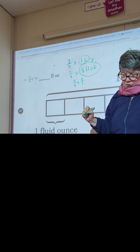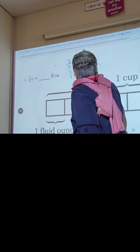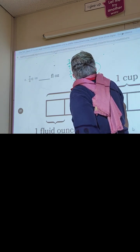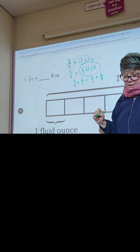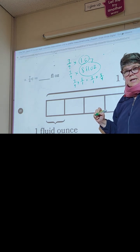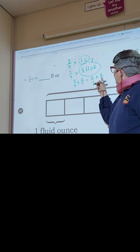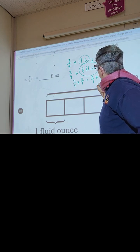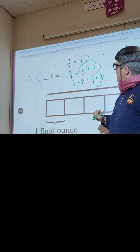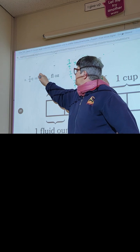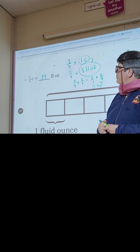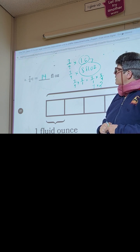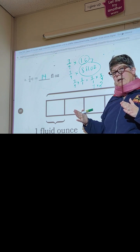So seven-fourths times eight — seven-fourths times eight over one. We can do it that way, or we can rewrite it as seven times eight-fourths. I'd rather do seven times eight-fourths because eight divided by four is two, and then I'm just doing seven times two.